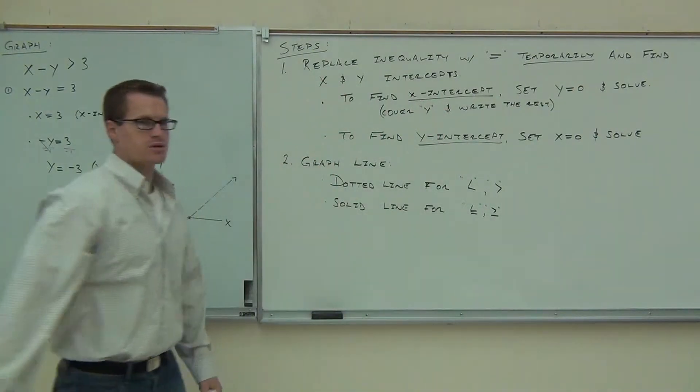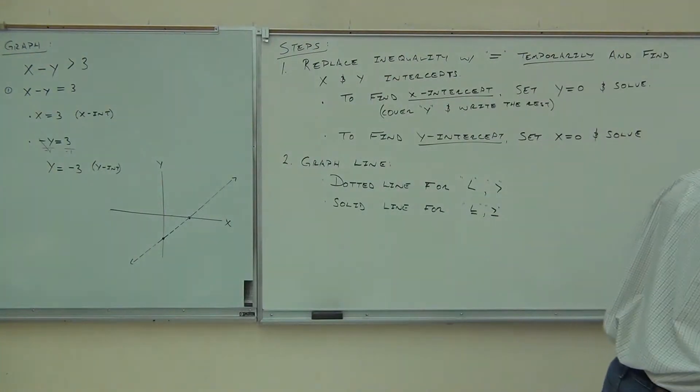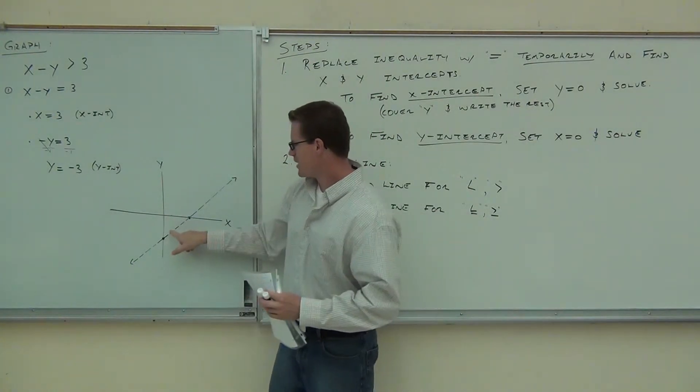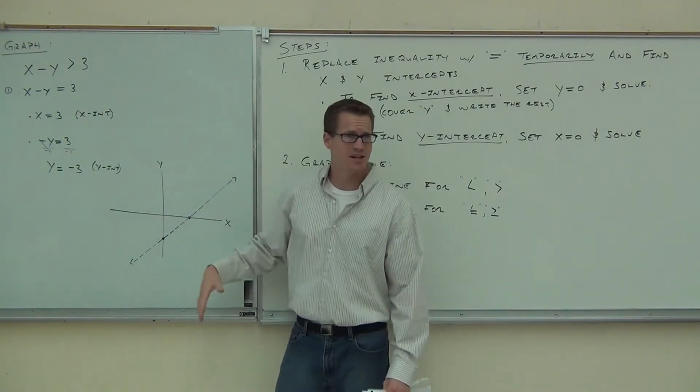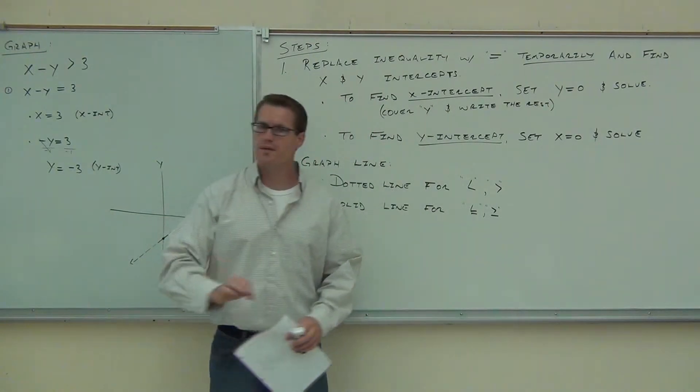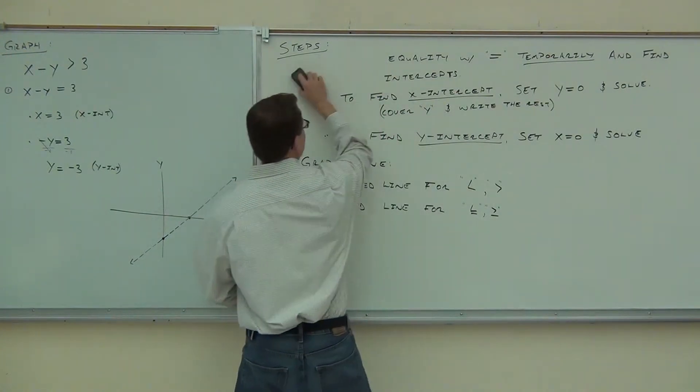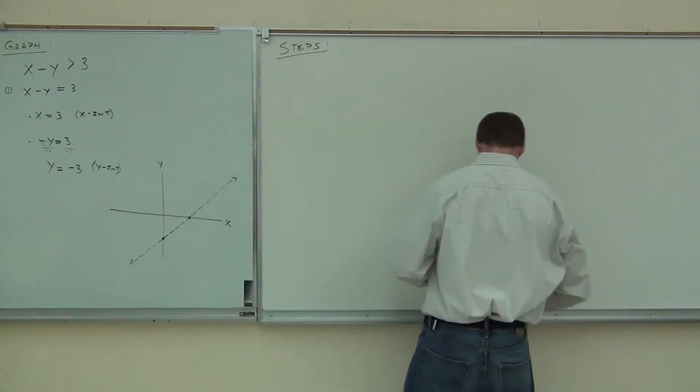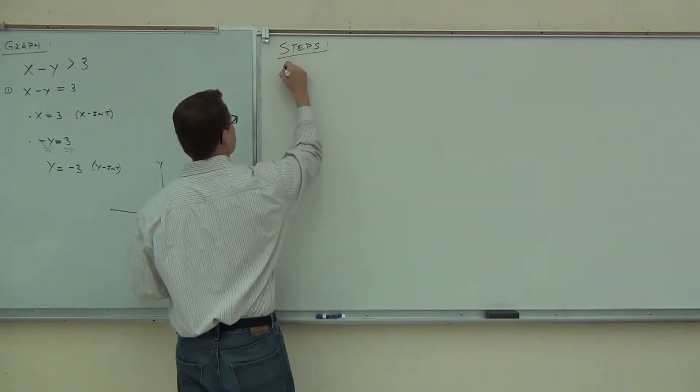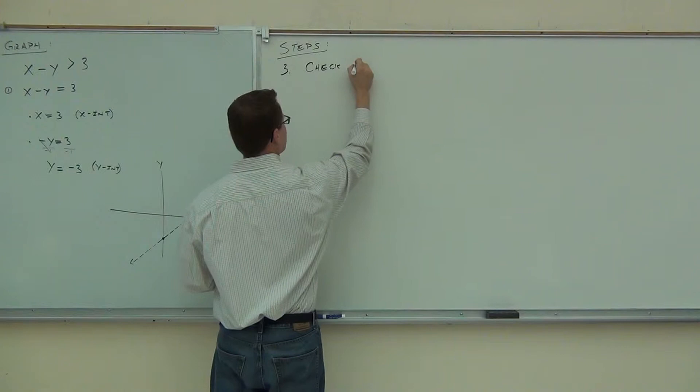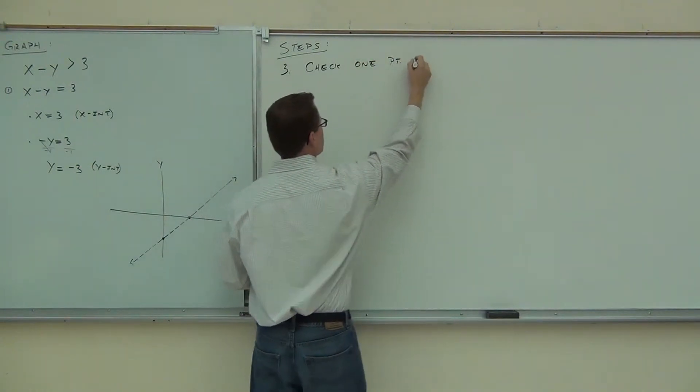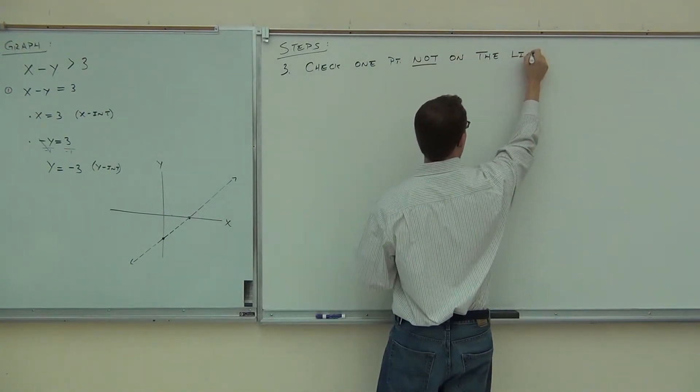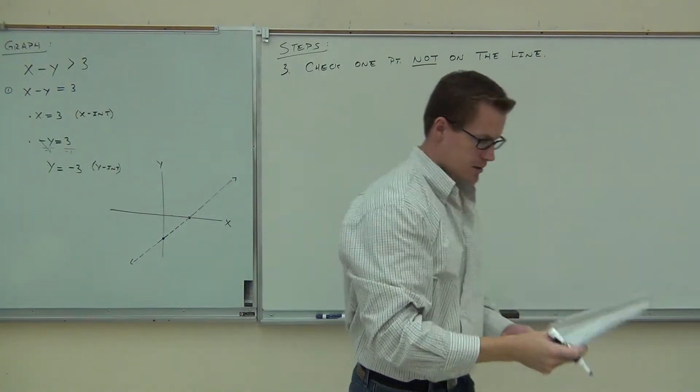That's our idea here. If you guys need these steps anymore, I'm going to erase them because our third step is kind of long. And I have to write out all these instructions for you. So step number three. You're going to check one point that is not on your line. Can I check a point on the line? Well, that would be kind of silly, right? Because if I checked a point on the line, would it tell me which side to shade? Not so much. So we're going to check one point that is not on our line.